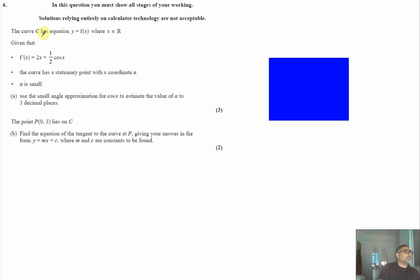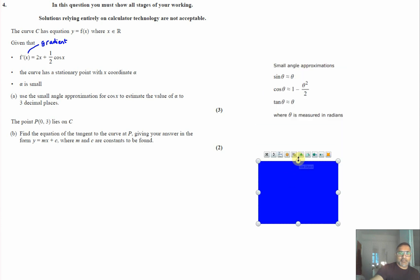Okay, question four. The curve C has equation y equals f of x, and we're given three different points. We're told that the gradient function, f dash of x, represents your gradient function. When you differentiate f of x, you get f dash of x, which tells us how to work out the gradient at any point on that curve. The curve has a stationary point with x coordinate alpha, and alpha is small. Using the small angle approximation for cos x, we need to estimate the value of alpha to three decimal places. You're given these in your formula booklet, so you don't need to memorize these.